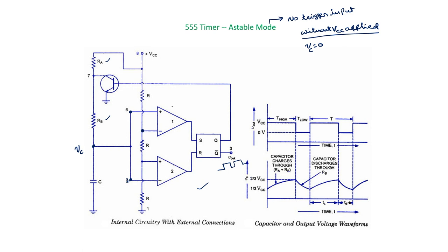For the upper comparator (operational amplifier), the reference voltage at its negative terminal is 2/3 Vcc, which we have already discussed in earlier lectures. For the lower comparator, this reference voltage is 1/3 Vcc. The 2/3 Vcc is applied to the negative terminal of the upper comparator, and 1/3 Vcc is applied to the positive terminal of the lower comparator. The capacitor voltage Vc is applied to the positive terminal of the upper comparator and the negative terminal of the lower comparator. If Vc is 0, the positive terminal of the upper comparator is less than 2/3 Vcc, so output is logic 0, meaning S = 0.